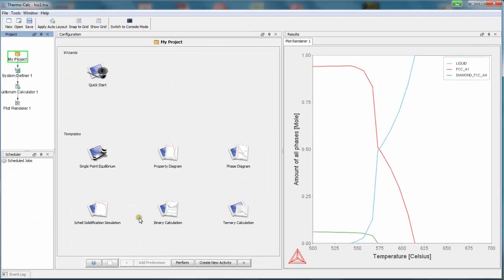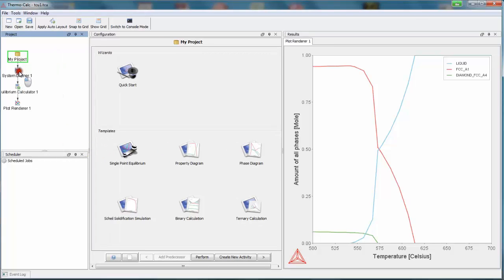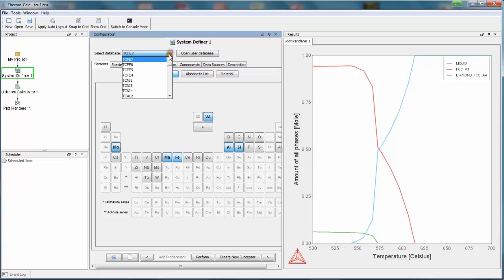But this kind of software can do much more. It can also calculate in a system given by this kind of selection, where we select for example aluminum, silicon, magnesium, manganese, and iron elements.